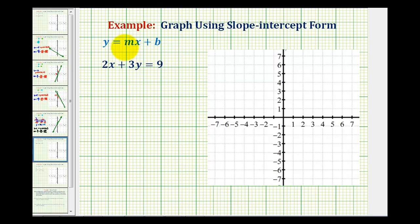And if we have a linear equation in this form, b will be the y intercept and m will be the slope.